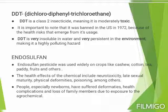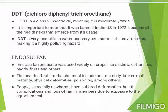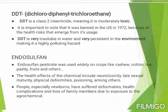DDT is very insoluble in water and very persistent in the environment, making it a highly polluting hazard. The endosulfan pesticide was used widely on crops like cashew, cotton, tea, paddy, and fruits until 2011, when the Supreme Court banned its production and distribution. Health effects include neurotoxicity, delayed sexual maturity, physical deformities, and poisoning — especially among newborns who suffered deformities, health complications, and loss of family members due to exposure.